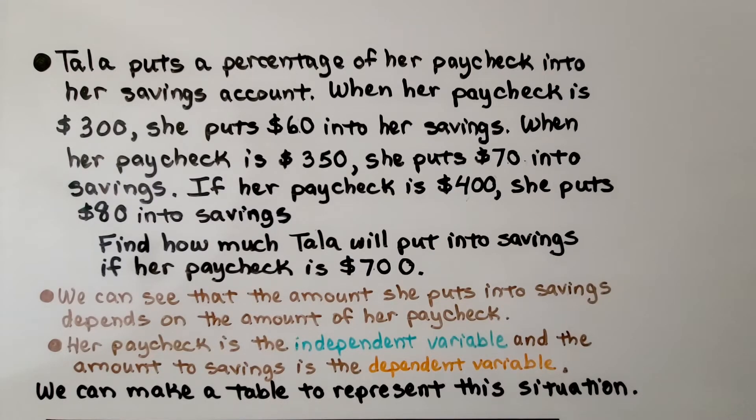Tala puts a percentage of her paycheck into her savings account. When her paycheck is $300, she puts $60 into her savings. When her paycheck is $350, she puts $70 into her savings. Find how much Tala will put into savings if her paycheck is $700. We can see the amount she puts into savings depends on the amount of her paycheck.